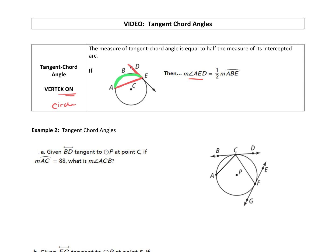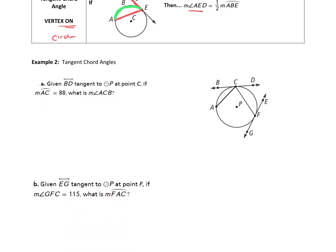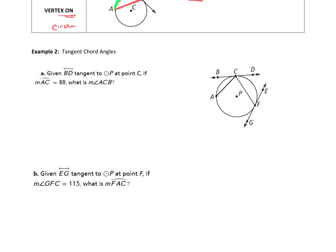All right, so that is our tangent chord angle. Let's take a look at a couple, hopefully, quick examples. All right, so part A, given line BD is tangent to circle P at C, if the measure of arc AC is 88 degrees, what is the measure of angle ACB?